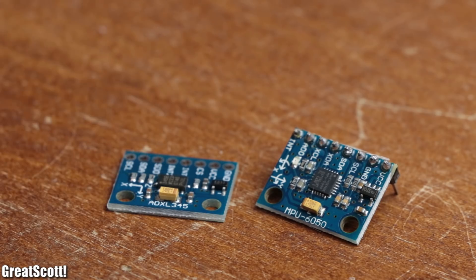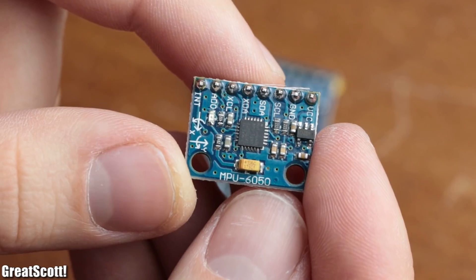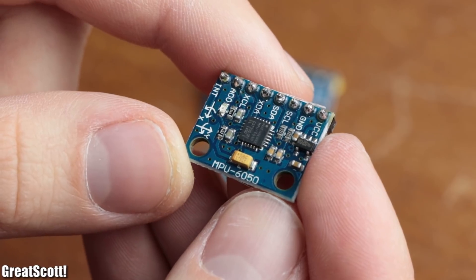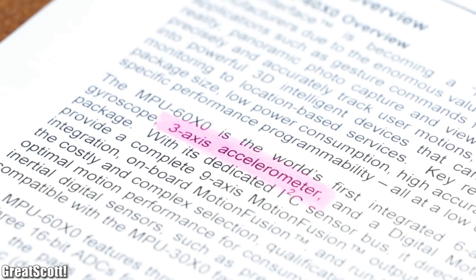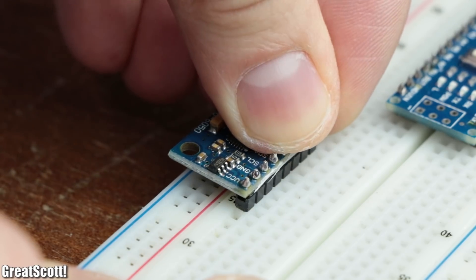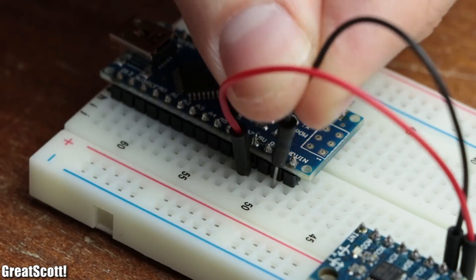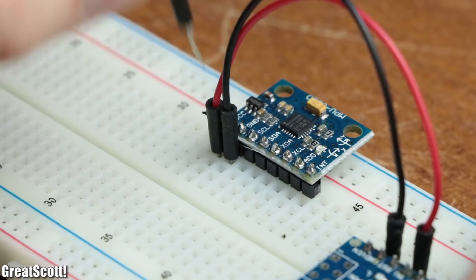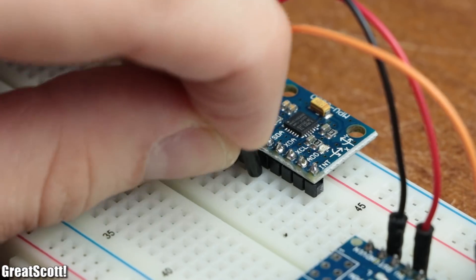When it comes to accelerometer ICs, the selection is quite big. What I initially wanted to use was this MPU 6050 three-axis accelerometer, which you can get for just one dollar. To interact with it, all I had to do was connect its power pins to the 5 volts and ground pin of an Arduino Nano, and hook up its serial clock pin to A5 and its serial data pin to A4.